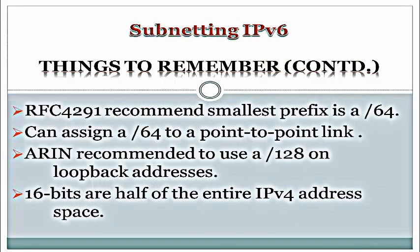According to RFC 4291, the current recommended smallest prefix is a /64. With so many addresses in IPv6, there isn't the same need for address conservation as there is in IPv4. We can assign a /64 to a point-to-point link and not feel guilty. The only exception is the recommendation from ARIN to use a /128 on loopback addresses. This gives us one block of hex digits, or 16 bits, to use for subnetting. One block might not sound like much, but 16 bits is half of the entire IPv4 address space.